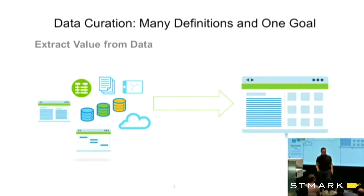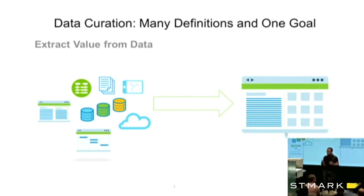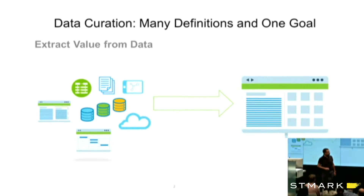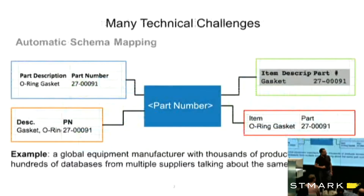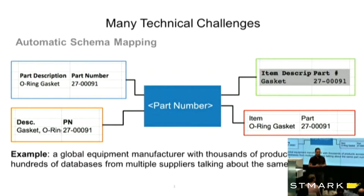Data curation is a big problem and it has many definitions, but it's all about how to extract value from the data. For that we create all sorts of data processing stacks to fill in missing values, enforce integrity constraints, and do data transformations. Let me quickly tell you about three major technical challenges in data curation that have been the main subject of academic papers, conferences, and theses.